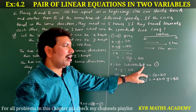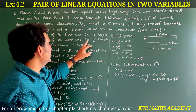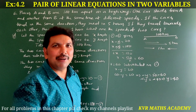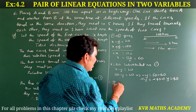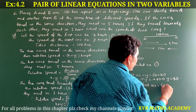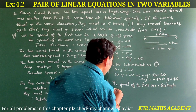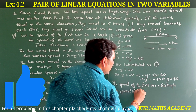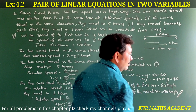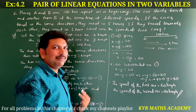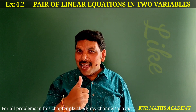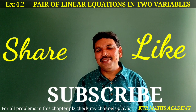We got x is equal to 60 and y is equal to 40. Therefore the speed of the first car is 60 kilometers per hour and the speed of the second car is 40 kilometers per hour. If you like this video please like and share, and don't forget to subscribe. Thank you very much.